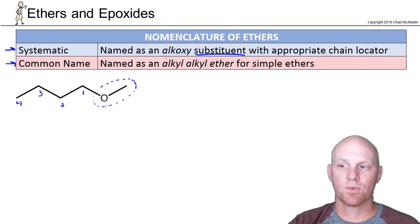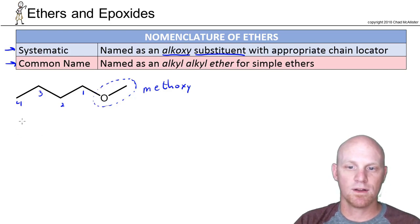Now in this case, and we won't use alkoxy generically, but in this case it's basically a methyl with oxygen. So this is a methoxy group. And in this case it's attached to carbon 1. So we'll give that chain locator name the substituent. So 1-methoxy and then your parent chain butane here. So that's the name 1-methoxybutane.